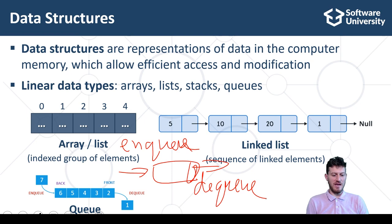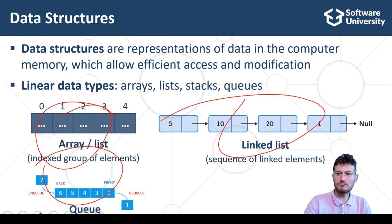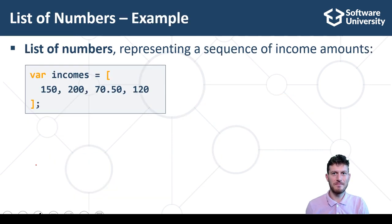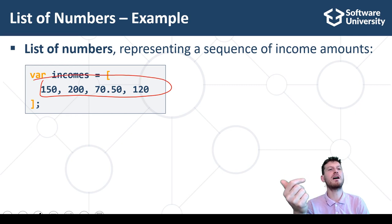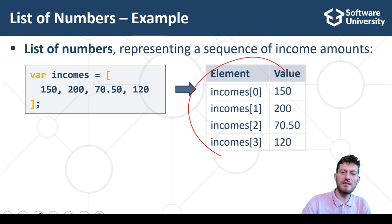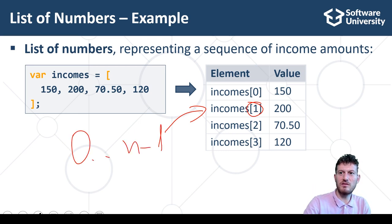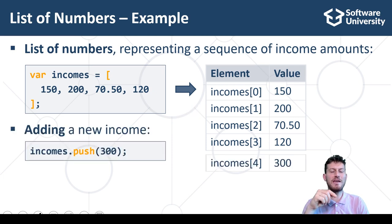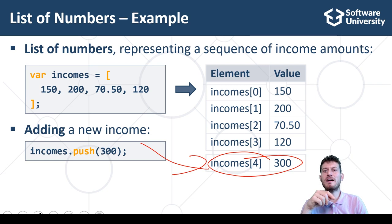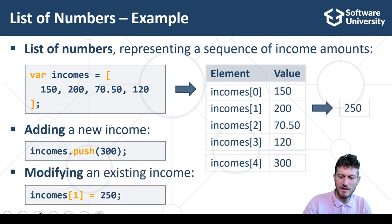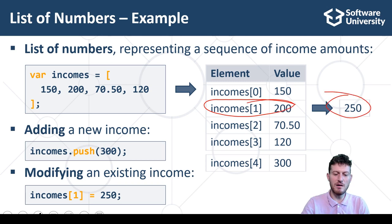We shall master the linear data structures in detail in the Advanced Programming Modules at SoftUni. This is a simple example which illustrates the list data structure. We have a list of numbers representing a sequence of income amounts. This is how the list looks like in memory. It is an indexed structure. Each element has a unique index, a number in the range from zero to the size of the list minus one. This is how we can append a new income. This is how we can modify an existing income by its index.